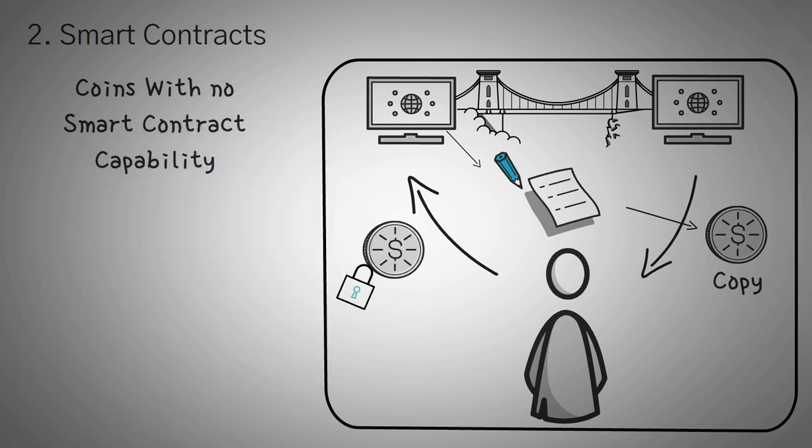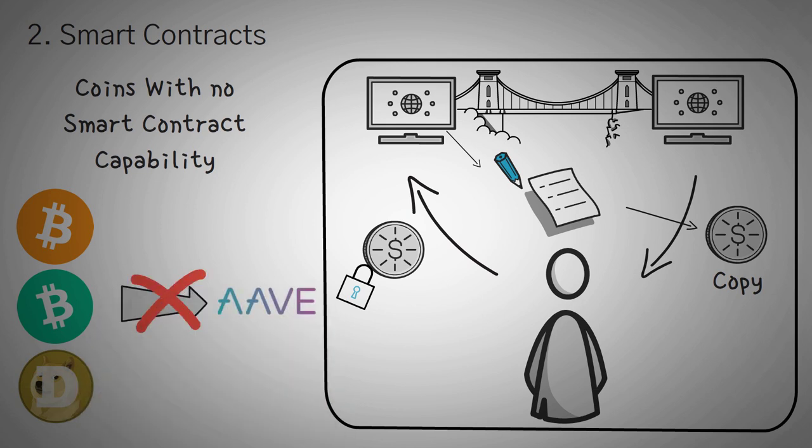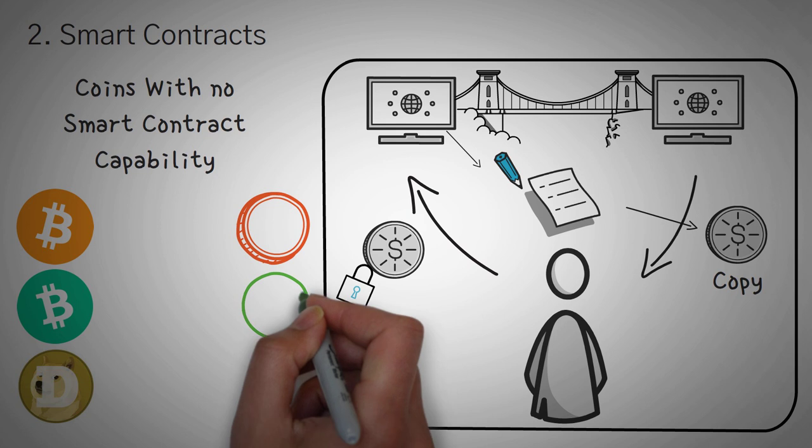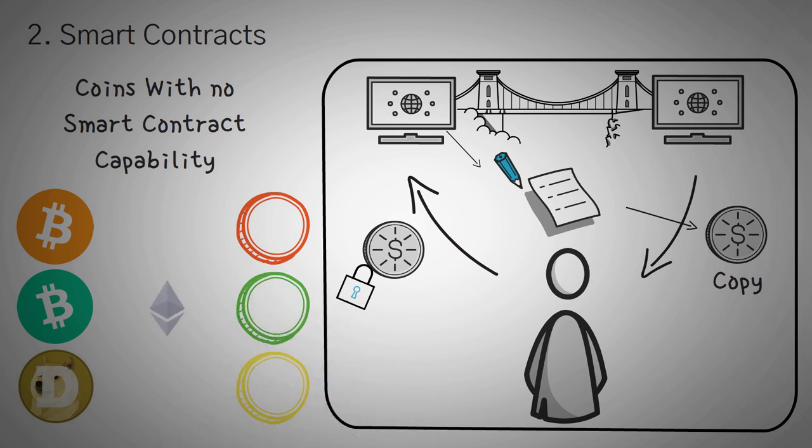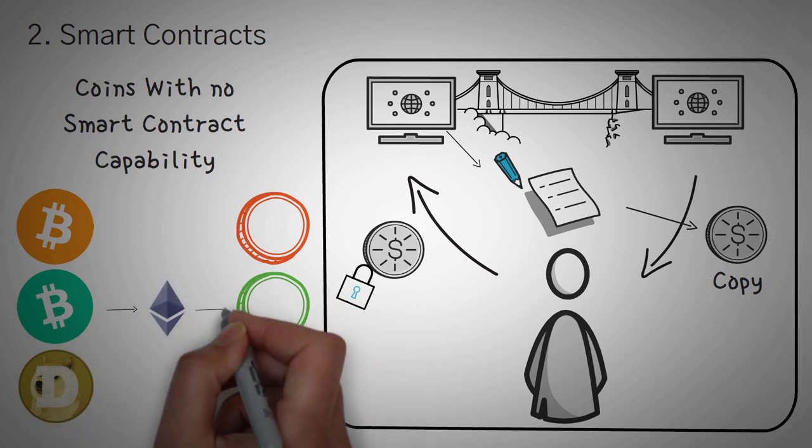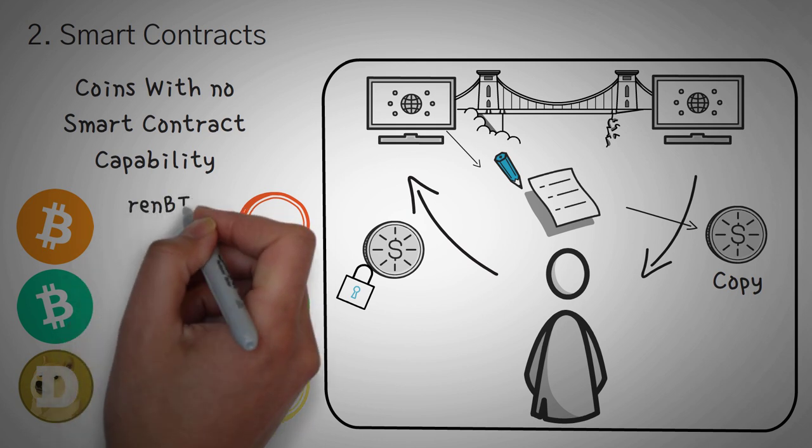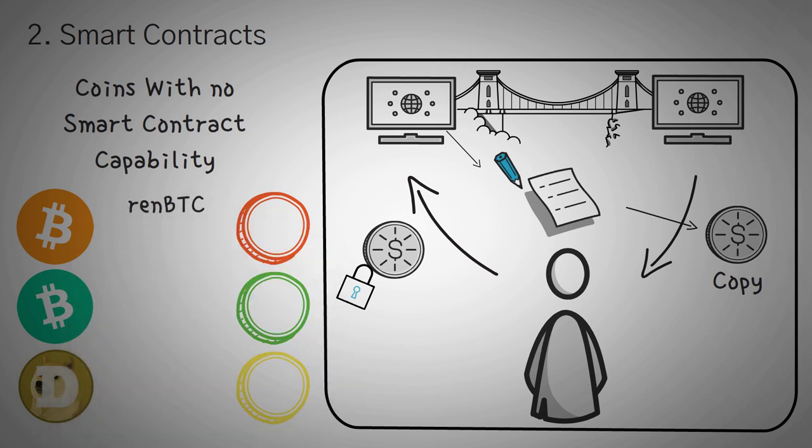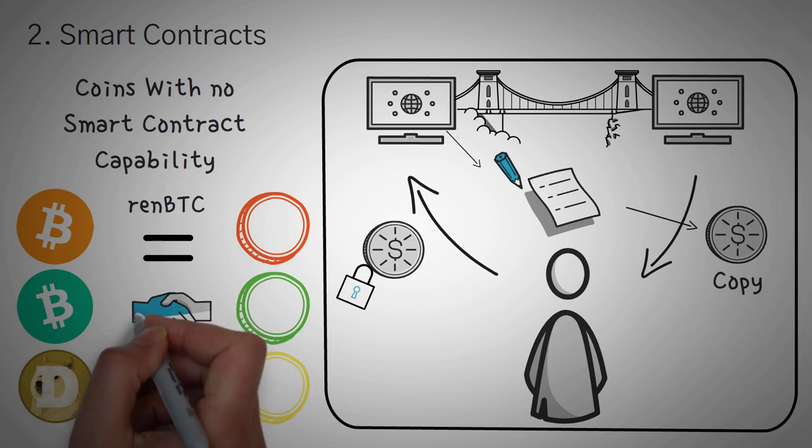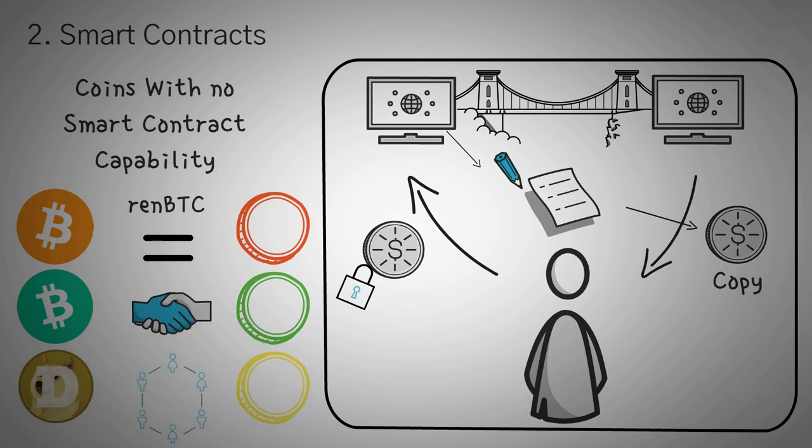It should also be assumed that this smart contract method is usually used for coins that don't have their own smart contract capability. For example, Bitcoin, Bitcoin Cash, and Dogecoin are three big coins that people love investing in, but they do not have the ability to do things like lend or borrow in Aave. Instead, you can simply get representations of these coins on a network that does allow smart contract interaction, like Ethereum. In fact, REN BTC is an Ethereum token that allows you to hold a token that is pegged to Bitcoin's price. So, essentially, it is Bitcoin. But, since it's on the Ethereum network, it gives you the capability to do things like lend it and interact with other decentralized applications.